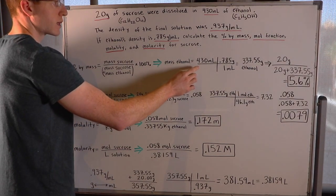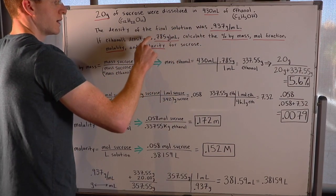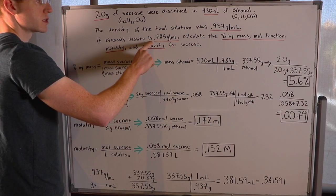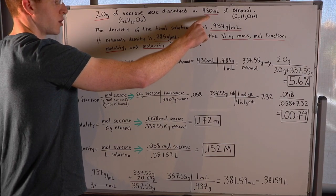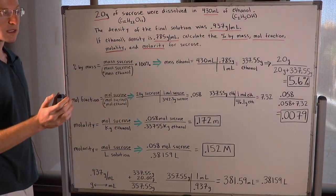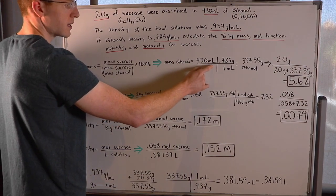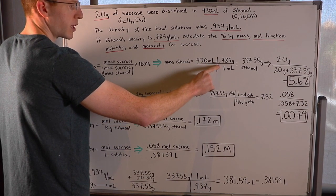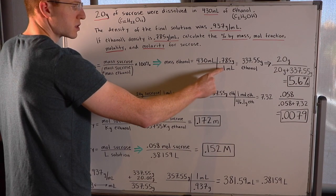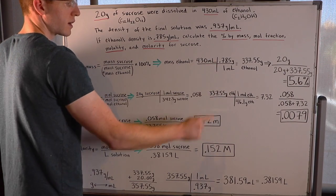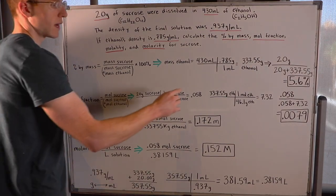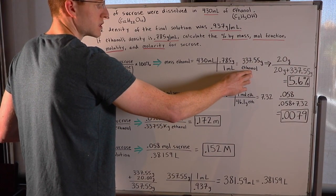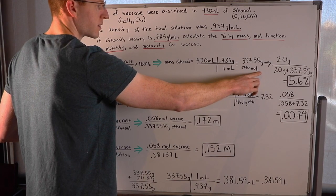So I noticed in the problem we were given a volume of ethanol, and then ethanol's density. Whenever you're given a substance's volume and density, you can find its mass. So I went ahead and did that here, 430 milliliters multiplied by this ratio of 0.785 grams per one milliliter, canceled out the units of milliliters, and allowed me to determine we had 337.55 grams of ethanol.